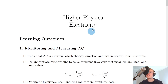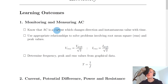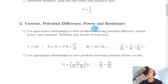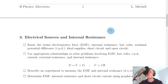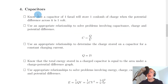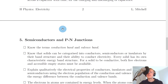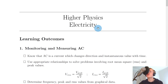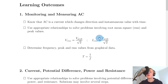For the electricity topic, the SQA split this into five key areas or five subtopics. The first one is called monitoring and measuring AC. We then have current, potential difference, power and resistance, which is a lot of recap from National 5 Physics. We then have electrical sources and internal resistance, which was all new stuff this year. Then we had capacitors for section four, and lastly semiconductors and P-N junctions for section five. We'll go through each of these in turn, starting with number one.